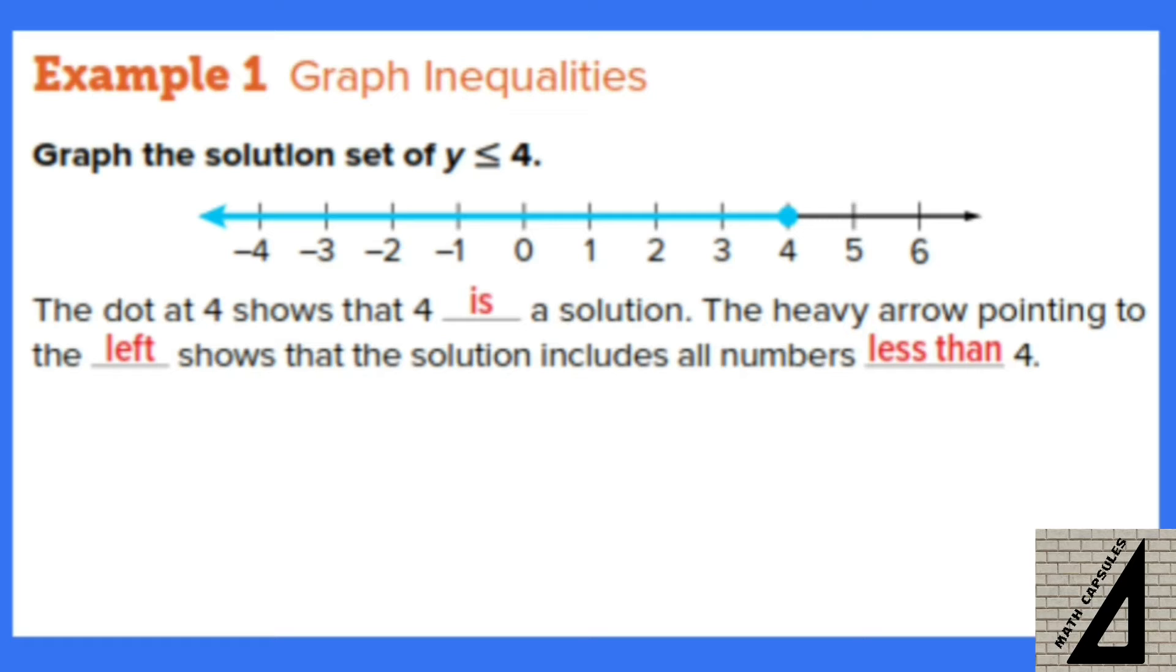So on the number line we make a dot on the 4, where the dot shows that 4 is a solution. And then we make a heavy arrow pointing to the left that shows that the solution includes all numbers that are less than 4.